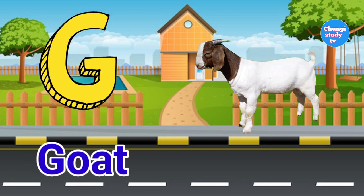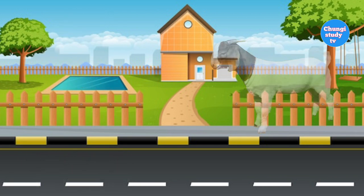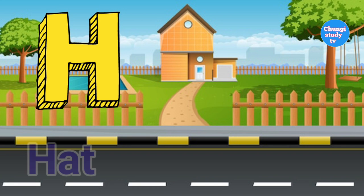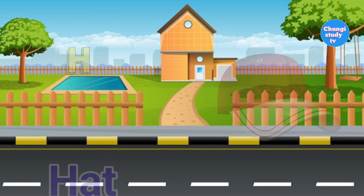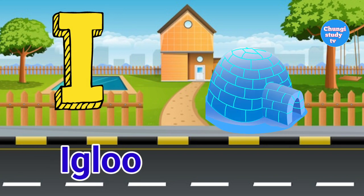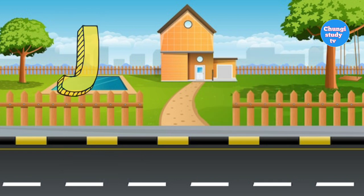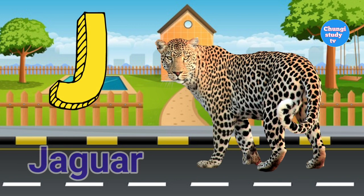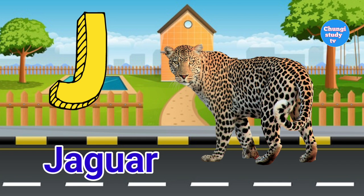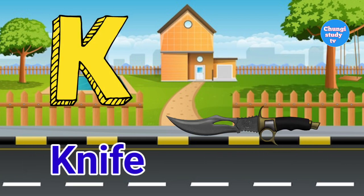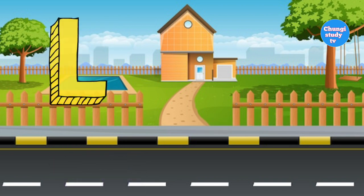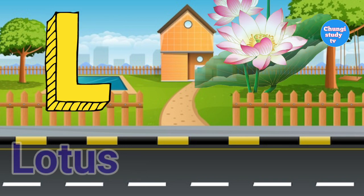G for Goat. H for Hat — Hat means Topi. I for Igloo. J for Jaguar. K for Knife.